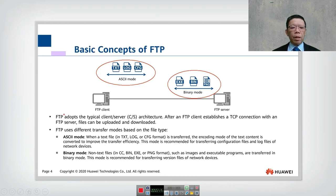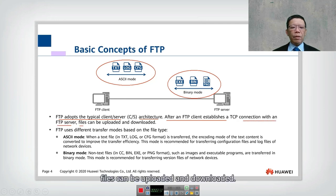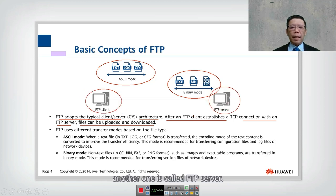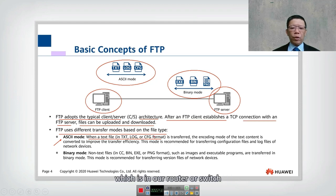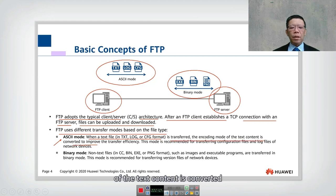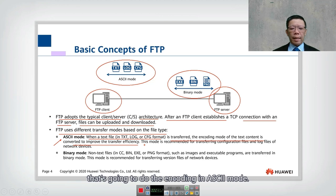FTP adopts a typical client-server architecture. After an FTP client establishes a TCP connection with an FTP server, files can be uploaded and downloaded. In ASCII mode, when text files such as .txt, .log, or .cfg files are transferred, the encoding of the text content is converted to improve file efficiency. This mode is recommended for transferring config files and log files on network devices.